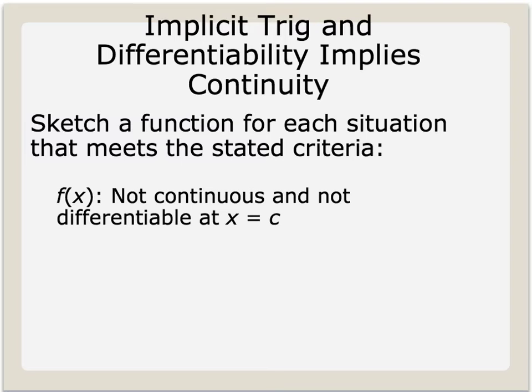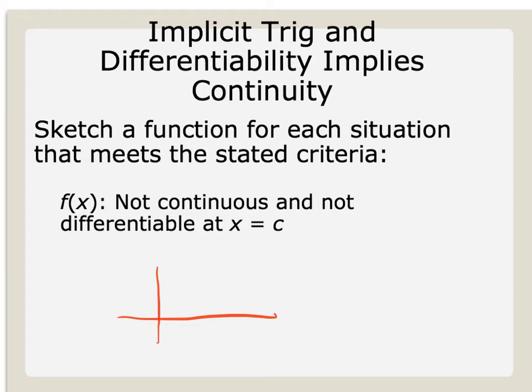This first problem is to sketch a function that's not continuous and not differentiable at x equals c. Pause the video, try to come up with that function, and then hit play to check. Not continuous means you have a hole, asymptote, or maybe a step discontinuity. Not differentiable means it can have any one of those things. So I'm going to draw a function that actually has a hole at x equals c — that would be a function that's not continuous, nor is it differentiable.